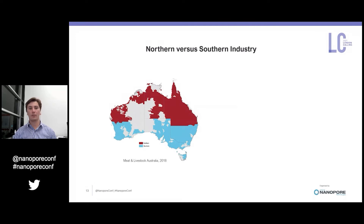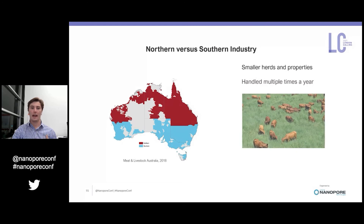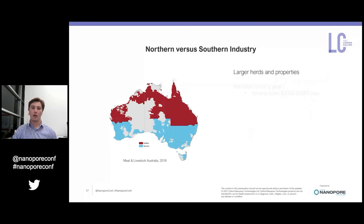The problem is that the Australian beef industry is broken up into a northern and southern industry. The southern industry is characterized by smaller herds and smaller properties, meaning animals are traditionally handled multiple times a year — so the SNP array pipeline is very well suited to the southern industry.